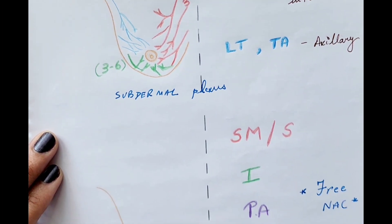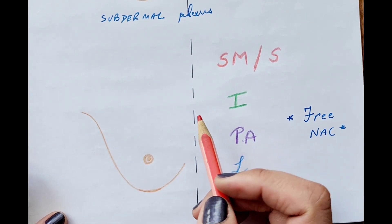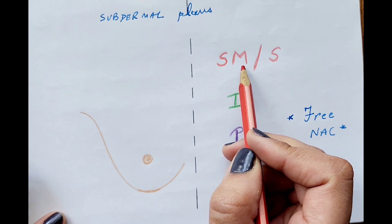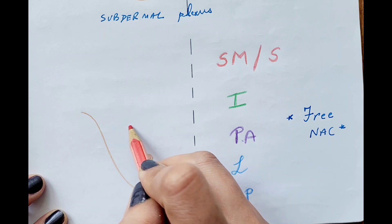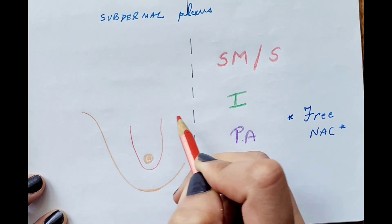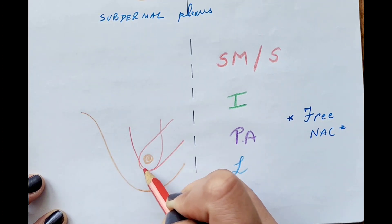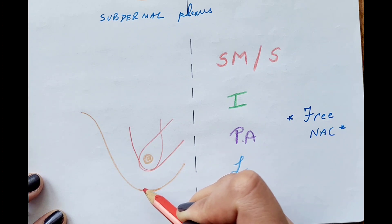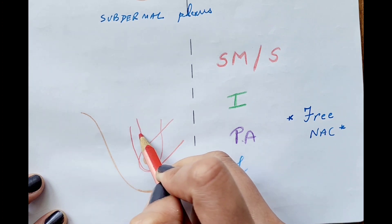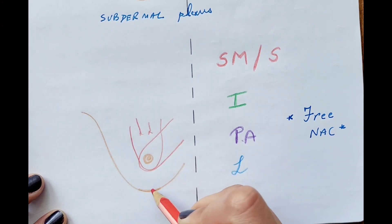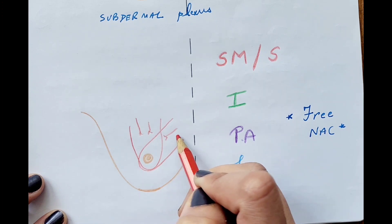When we talk about the superior or superior-medial technique, the blood supply to the nipple areola complex is going to come from the superior side or the superior-medial side respectively. If the supply is coming from all the superior vessels, it is the superior pedicle technique. If it is going in a superior-medial direction, it is the superior-medial pedicle technique.